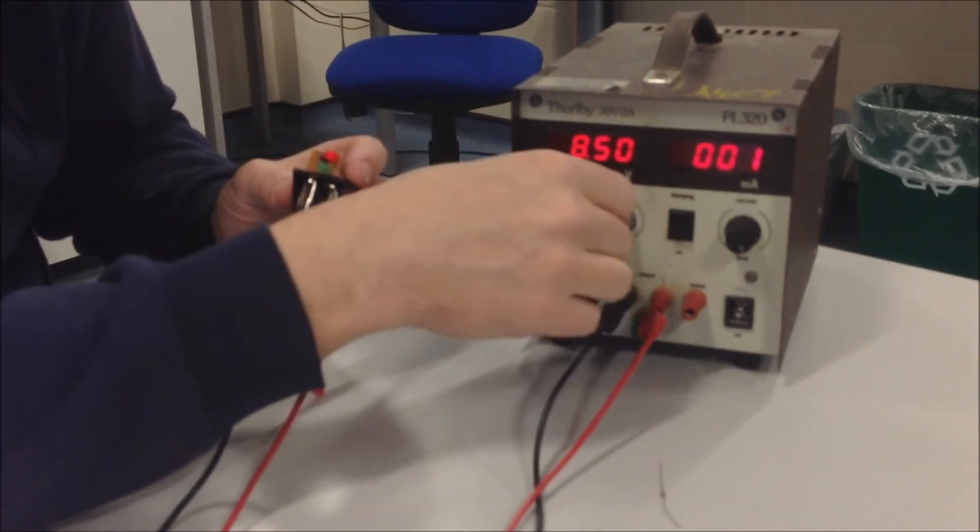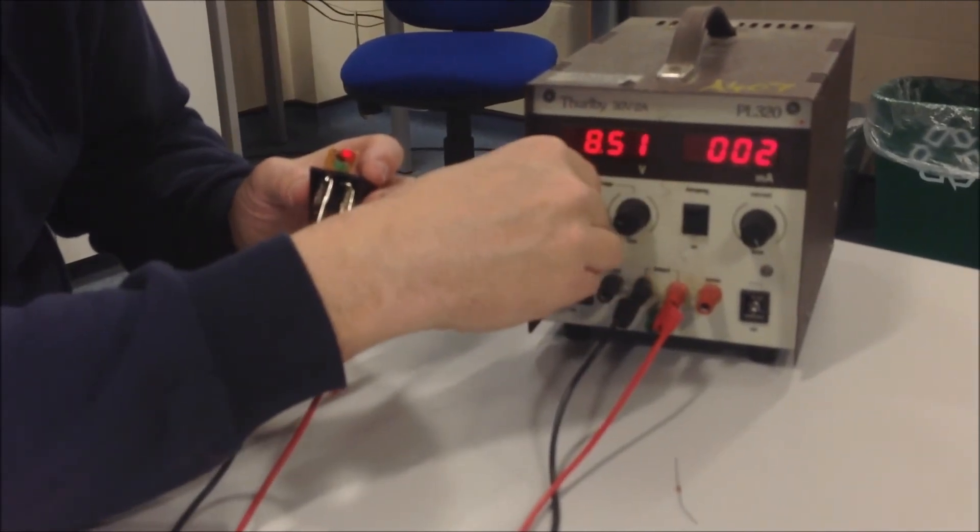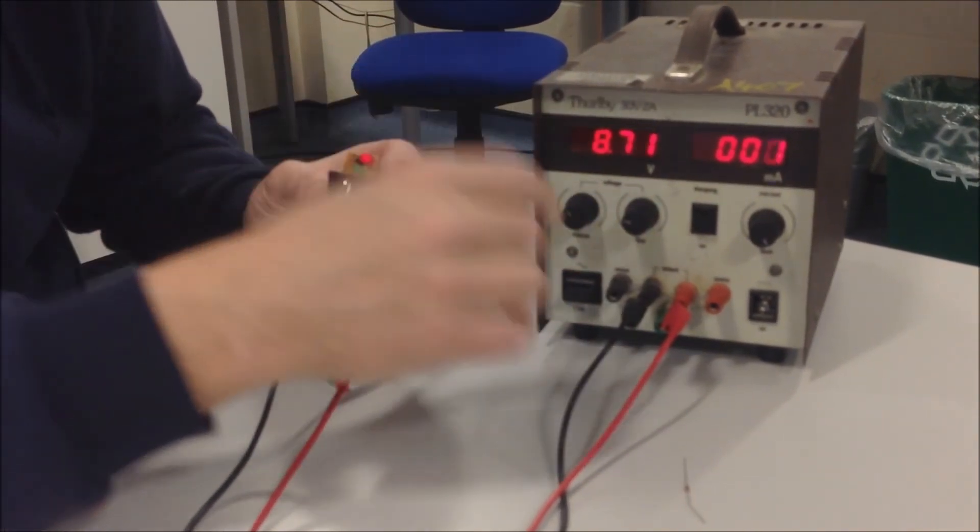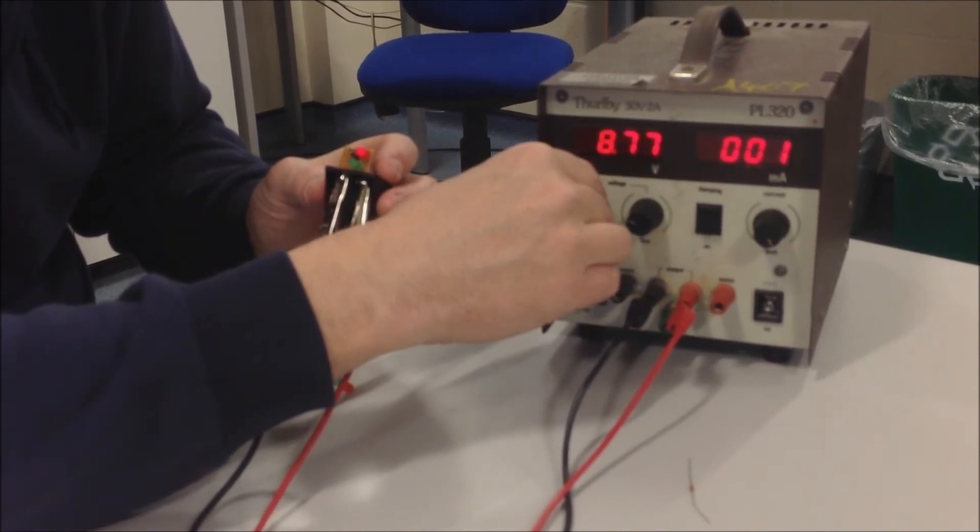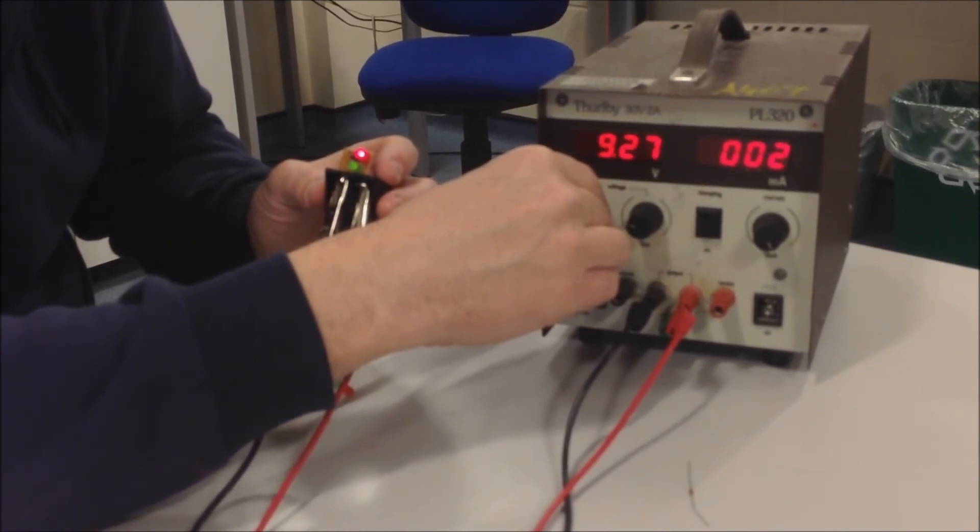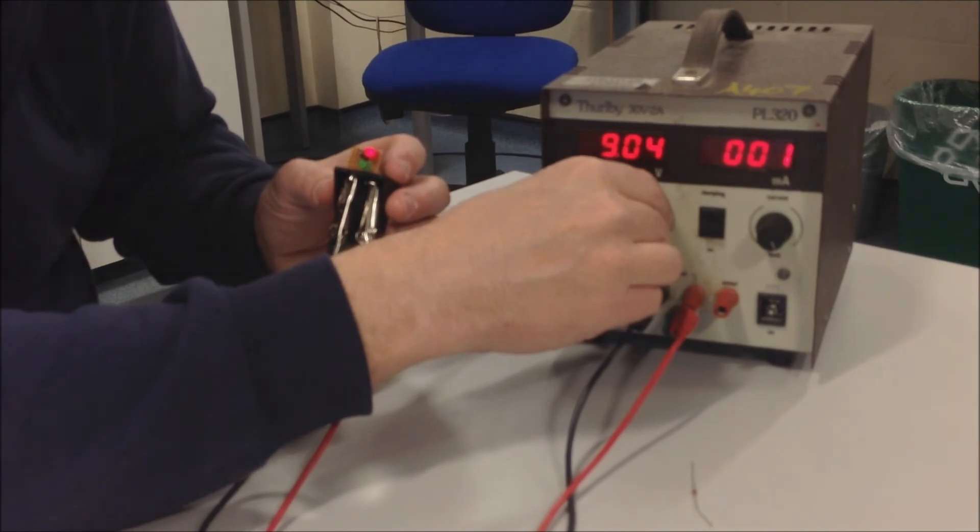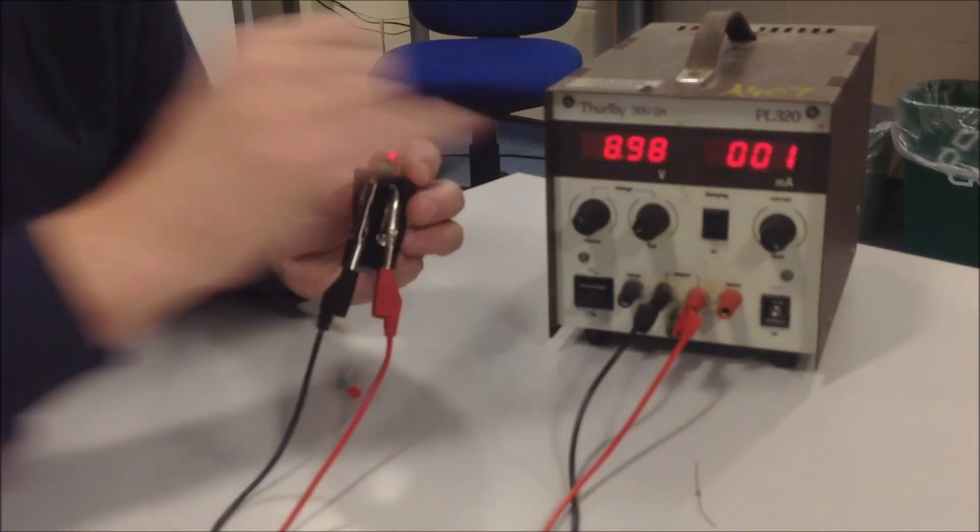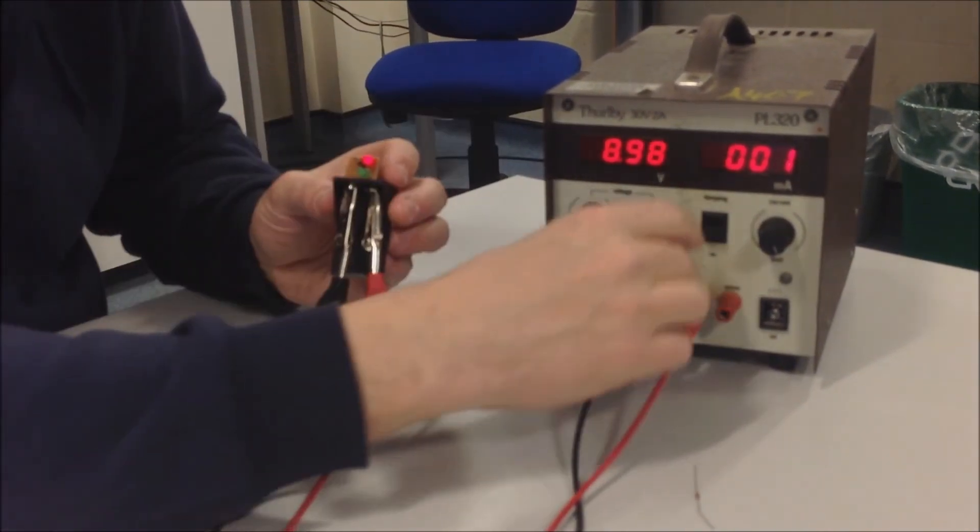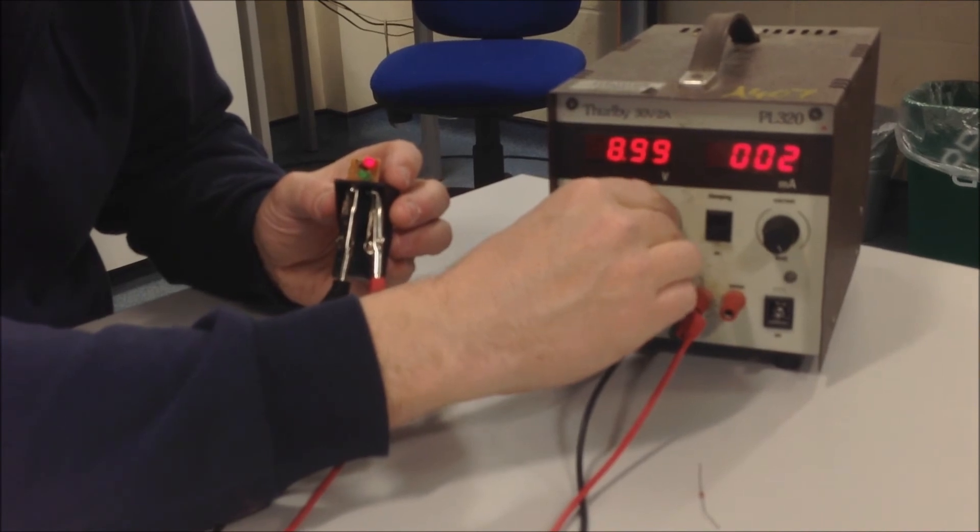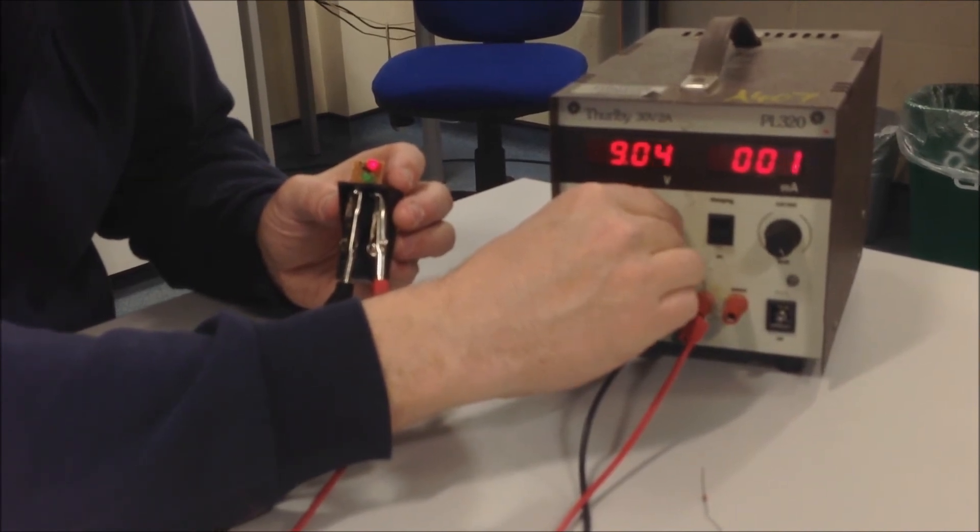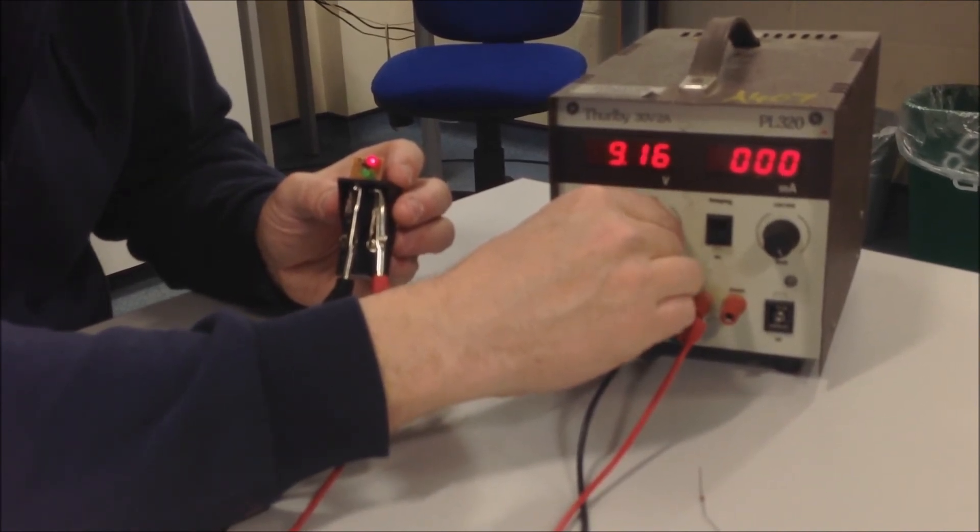And it's quite steady all the way up to about 9 volts. You just see the red one, we're at 8.97, and then we go up to 9 volts and the green one starts to come on.